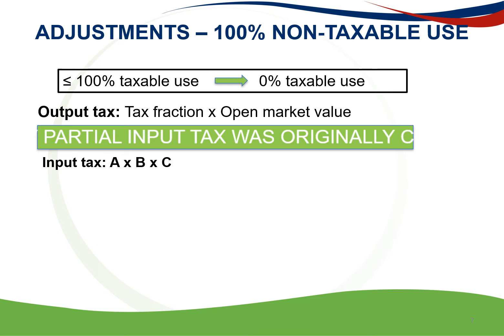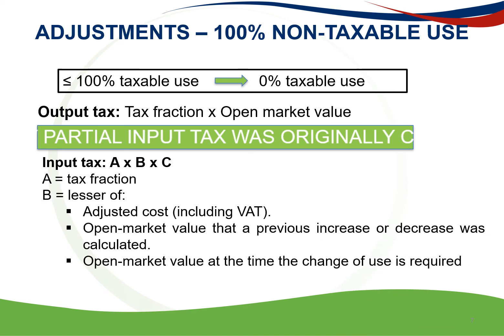For this purpose, the following formula is used: A times B times C, where A is the tax fraction. B is the lesser of the adjusted cost including VAT, or the open market value on the date that a previous increase or decrease was calculated if the open market value was lower than the adjusted cost, or the open market value of the goods or services at the time the change of use adjustment is required. C is the percentage used for non-taxable purposes for the period before the adjustment.